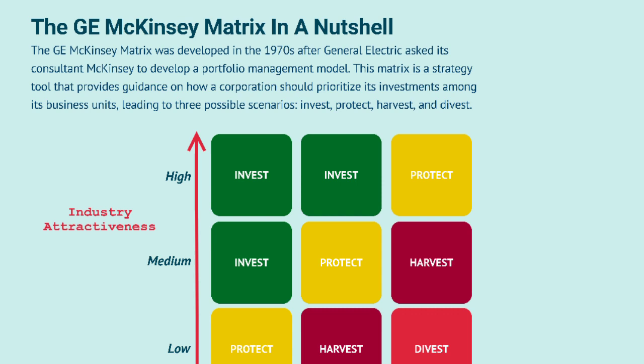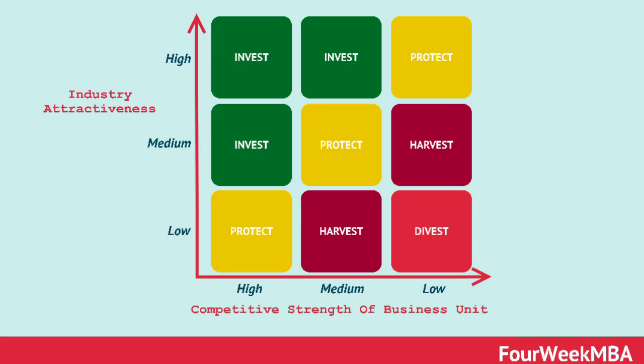When dealing with the General Electric model, we deal with two things: competitive strength and market attractiveness. The X-axis is for the competitive strength of a business unit — how competitive the branch, product, or service is in the market. The Y-axis is for market attractiveness — how much it attracts the market, whether it has the attention of the market or not. Both axes are rated on a scale of low, medium, and high.